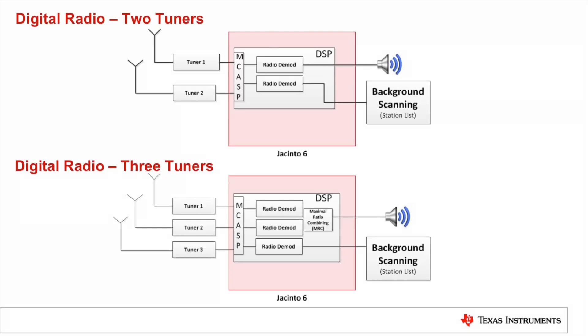TI's SDR also supports maximum ratio combining, or MRC, to get better digital radio coverage. MRC uses two antennas and thus two tuners acting as one to provide the best possible experience to the consumer by reducing the number of blends between digital and analog through improved carrier-to-noise ratio. TI's Jacinto 6 processor can operate in many different modes, such as using two tuners for digital radio audio plus background scanning, or using three tuners to implement digital radio and audio with MRC plus background scanning.